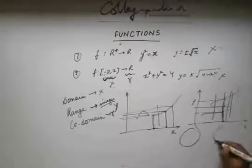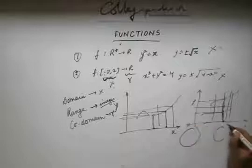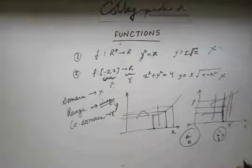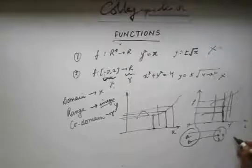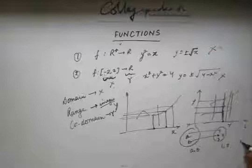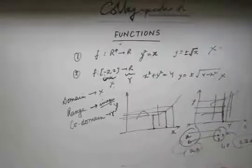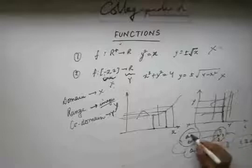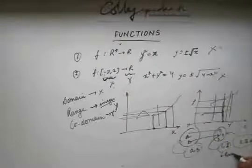Let's say I have two sets x and y. I have two elements in set x and about four elements in set y, and one rule mapping them. So the domain is {a, b}, the range is {1, 2}, and the codomain is {1, 2, 3, 4}. It has taken into account all the elements of set y as codomain, and only the images of the elements of set x form the range.